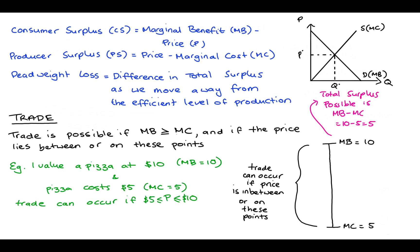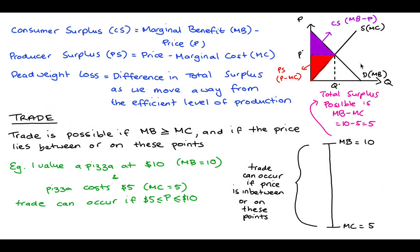Our supply curve tracks our marginal cost of production and our demand curve tracks our marginal benefit of consumption. For all units up to Q*, the marginal benefit — tracing it out in green — is above marginal cost. When marginal benefit is higher than marginal cost, trade is possible as long as the price lies between these limits. The market price in perfect competition, P*, is such that it allows for all of these trades to happen. To find consumer surplus, we take the difference between marginal benefit and price — that area here. For producer surplus, we take the difference between price and marginal cost — that area here.